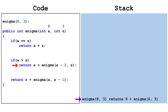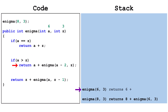enigma(6, 3) is pushed onto the stack. a equals z is false, so we continue on. a greater than z is true, so this frame will return 6 plus whatever is returned by enigma(2, 3).